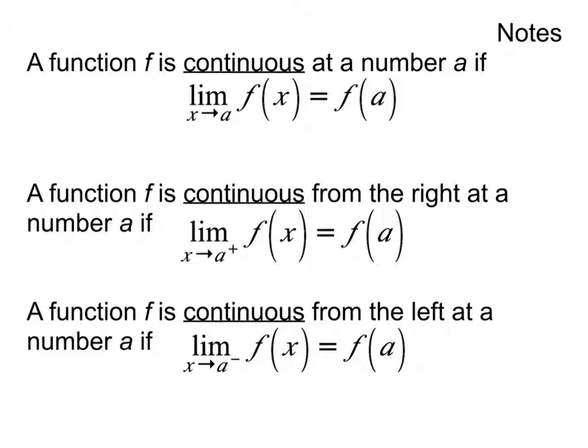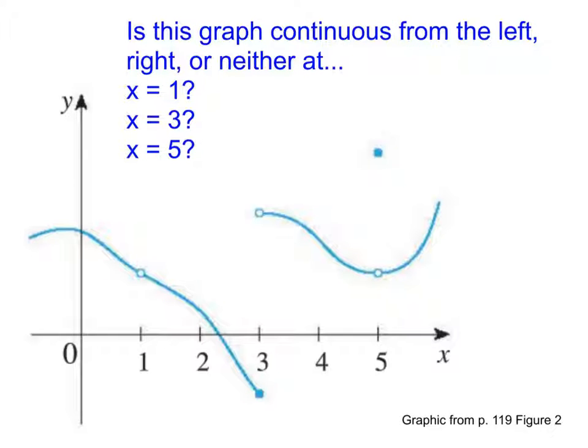And so to practice this, we're going to go back to that very first graph that we looked at and we saw that there were three discontinuities in this graph. Well, now I want to know, is it continuous from the left at any of those points? Is it continuous from the right at any of those points? Or is it neither at those points? So look at each of those three, and please decide if it's left, right, or neither.